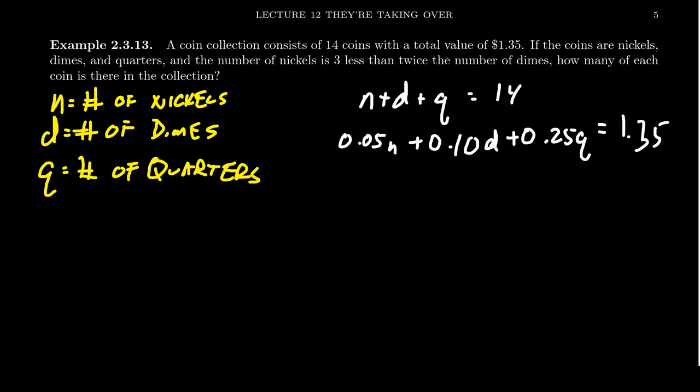Since there are three variables, we need a third equation to solve this system. We're told that the number of nickels is three less than twice the number of dimes. So n equals 2d minus 3.